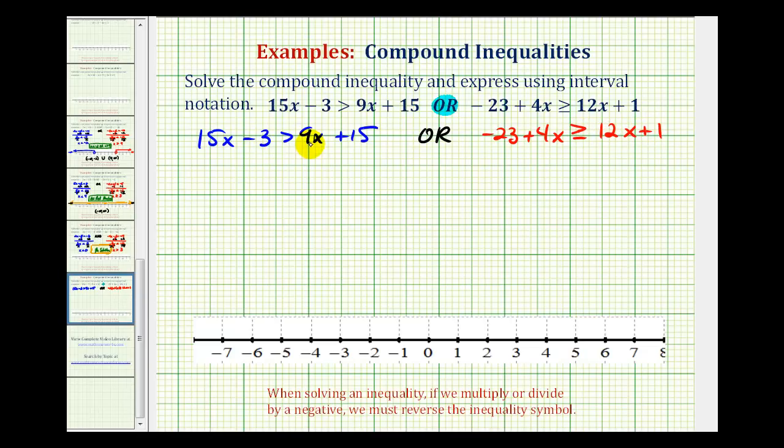Notice that we have variables on both sides of the inequality. The first step is to get the variable terms on one side, so we can undo positive 9x by subtracting 9x on both sides. 15x minus 9x would be 6x. This would be zero and then we have 15.